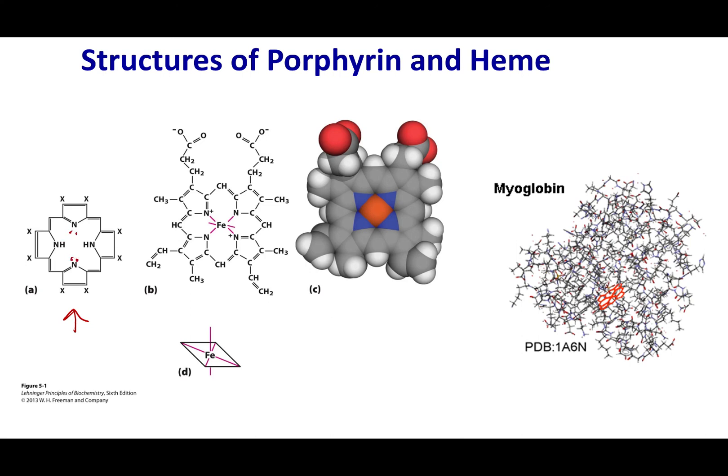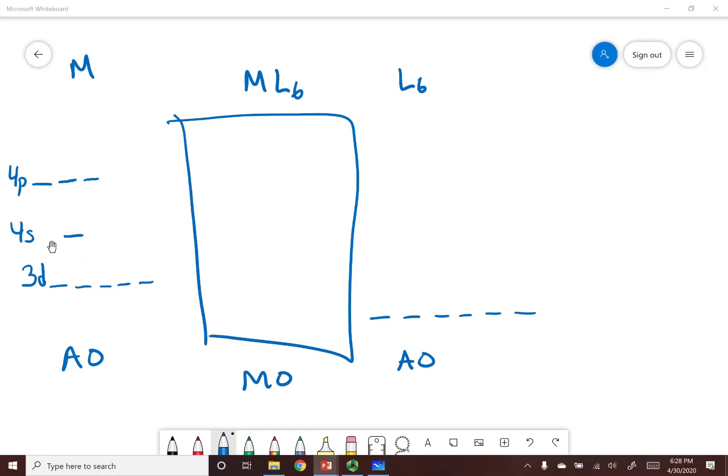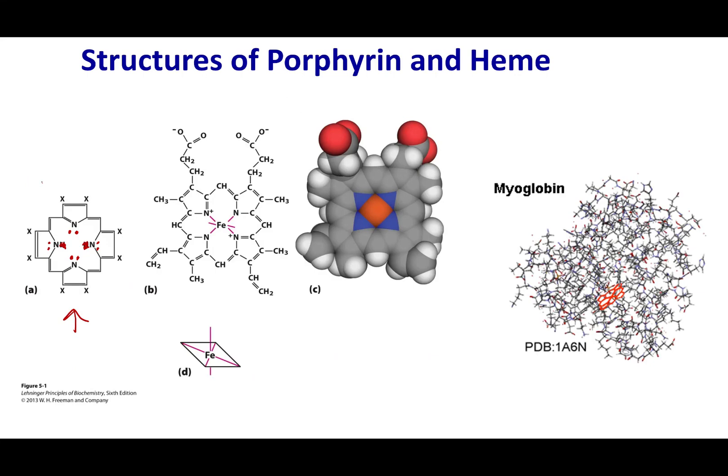And if this molecule were to lose hydrogens, these nitrogens would have lone pairs. What that means is that a metal can sit in the center of this ligand and this ligand is considered a tetradentate ligand. It binds to my metal in four different spots by each nitrogens. So what I can have is a metal that sits in the center of this ligand.